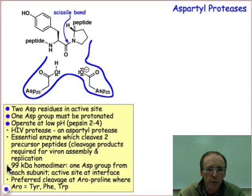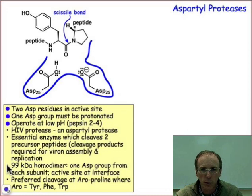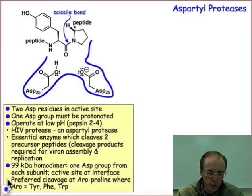The HIV protease consists of two chains. Each of them are about 99 kilodaltons in size, and one chain will deliver one aspartyl group, and the other chain will deliver the other aspartyl group into the active site that we're going to see in just a moment.